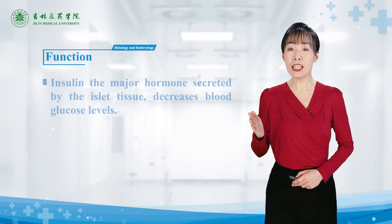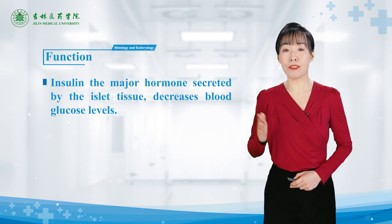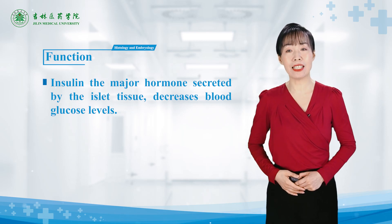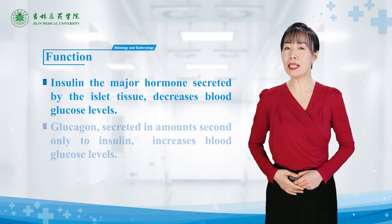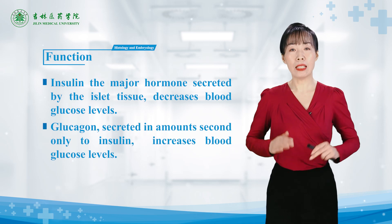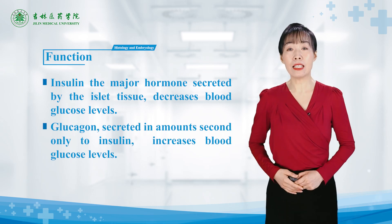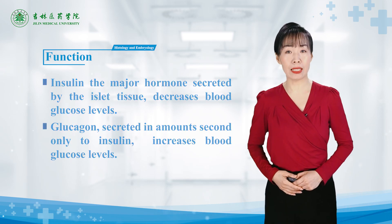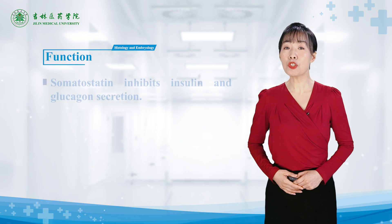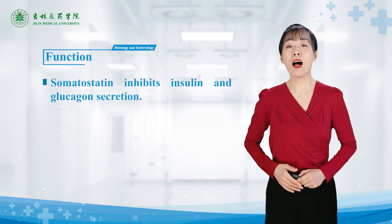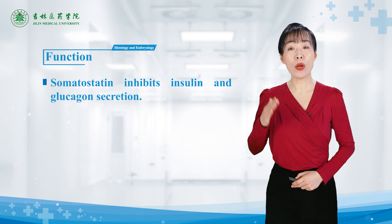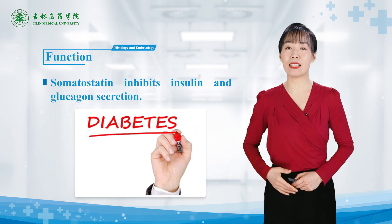If the islets of Langerhans undergo pathological changes, B cells degenerate and insufficiently secrete insulin; blood sugar will rise and be discharged with the urine, which is called diabetes.